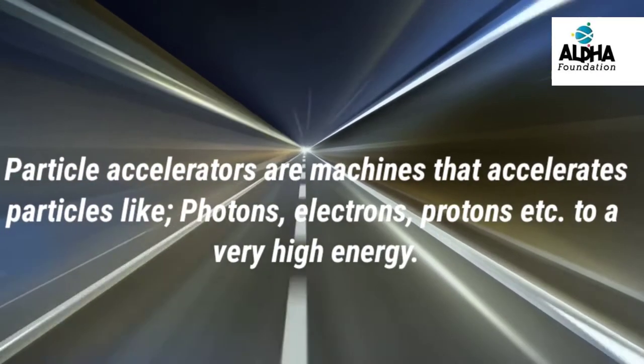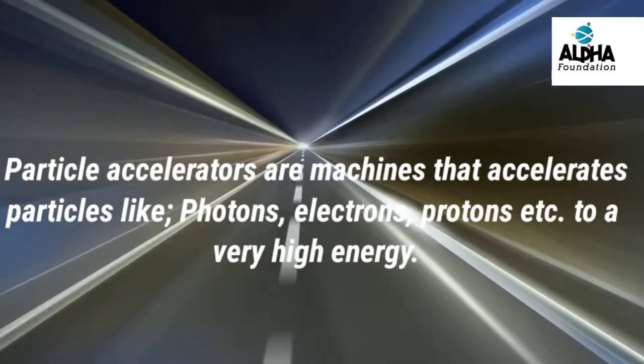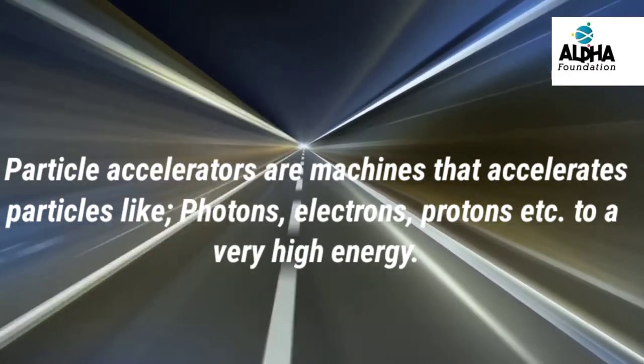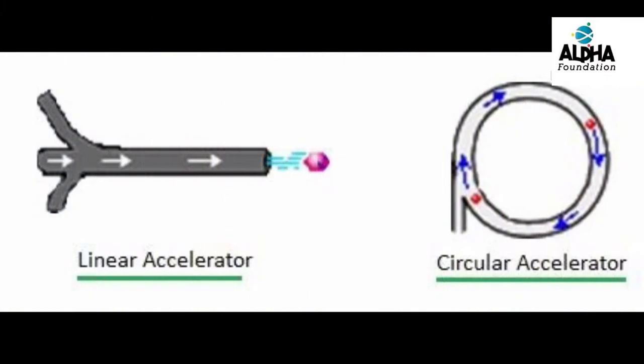Particle accelerators are machines that accelerate particles like photons, electrons, protons, etc. to a very high energy. And there are basically two types: the linear accelerators and the circular accelerators. Linear accelerators propel particles along a straight line, while the other one is along a circular track.